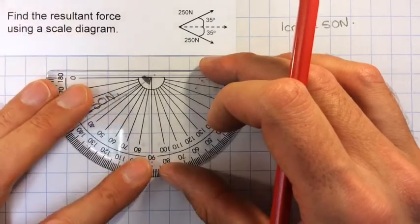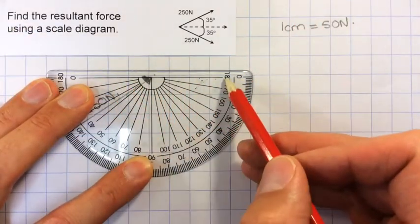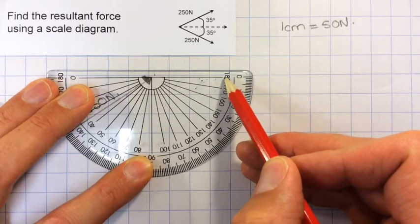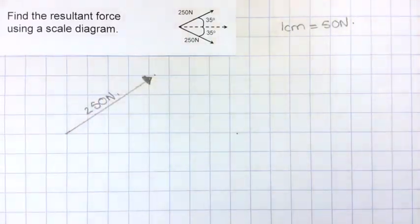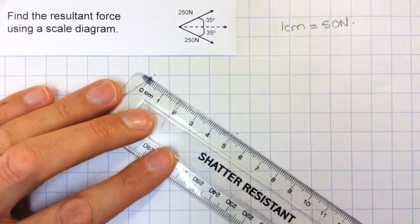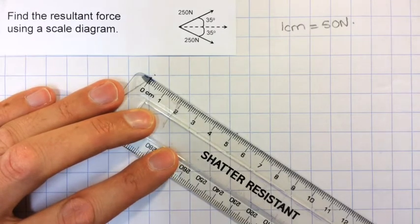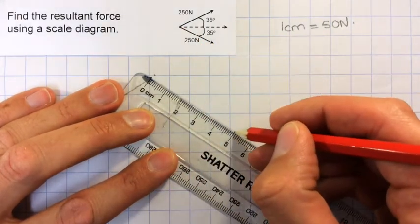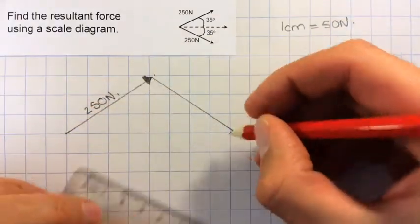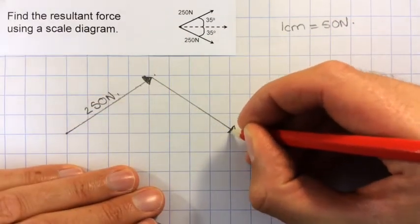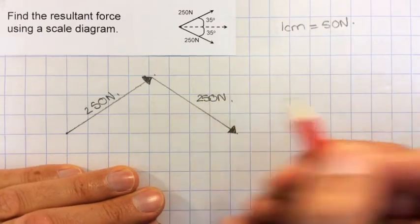I need to make sure that my protractor is lined up with the squares on the paper. Then I can mark off my 35 degrees and draw in my 5 cm length one again, which will look like that to give me another 250 N.